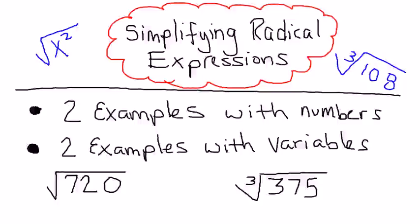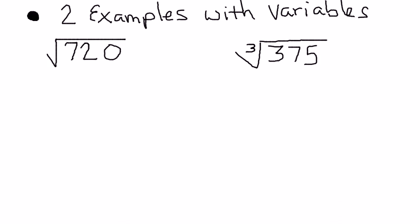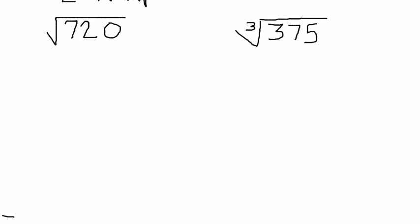You can handle the number separately and the variable separately. So let's try to do a good job of understanding these, and then you'll be ready for the tougher ones. I'll do two examples with numbers first. Let's take a look at the first one: the square root of 720.